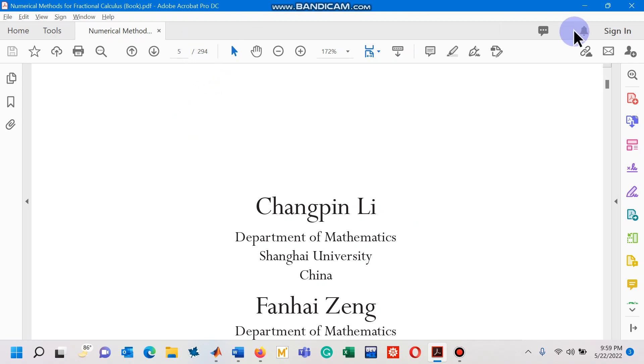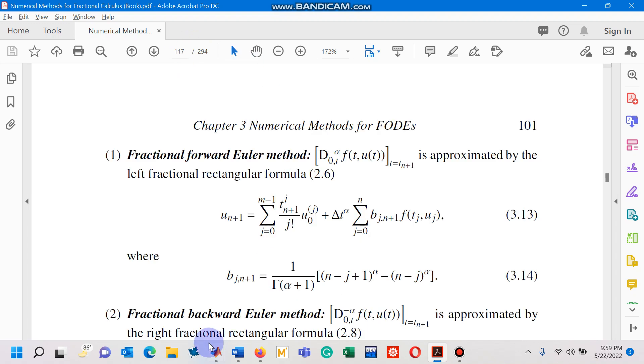If you open page number 117 of this book, you can see the fractional forward Euler method given by equations 3.13 and 3.14.